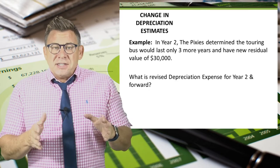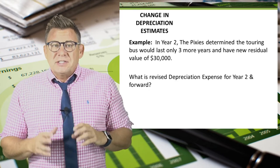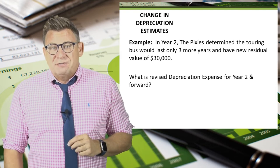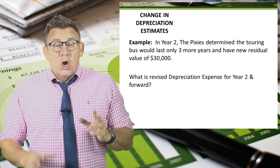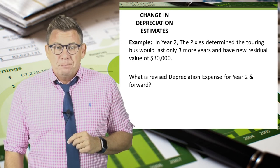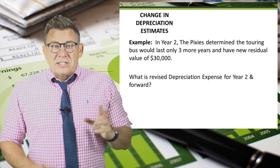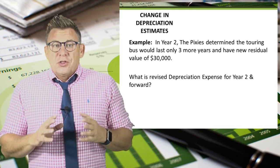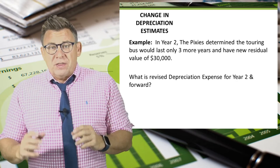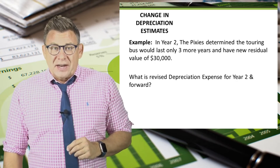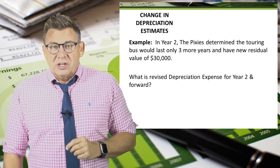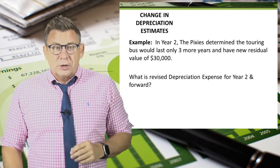Now let's assume in year two it was decided that the tour bus wasn't going to last five years nor be worth $50,000 at the end of its useful life. Assuming that the bus would last three more years and be worth $30,000 at that time, let's revise depreciation expense for year two and forward.